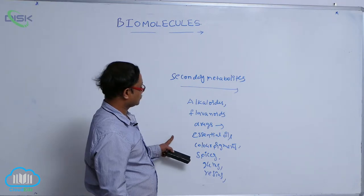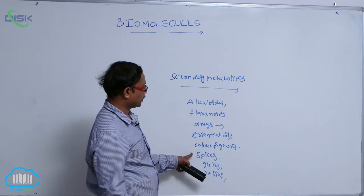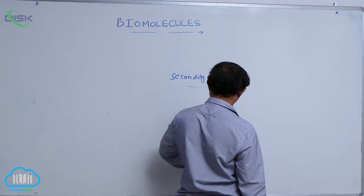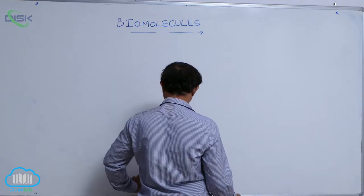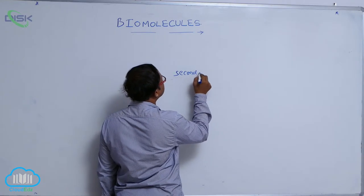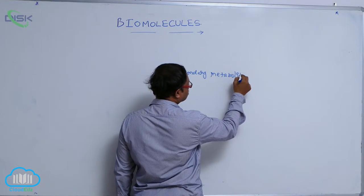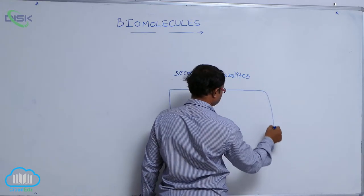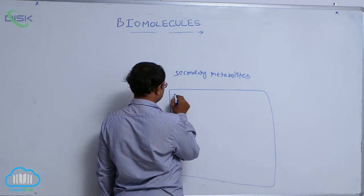Drugs, Essential oils, Color pigments, Spices, Gums, and Resins. For example, you take that column about secondary metabolites. Secondary metabolites.